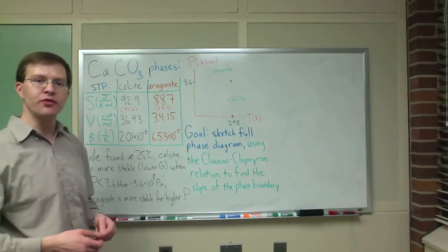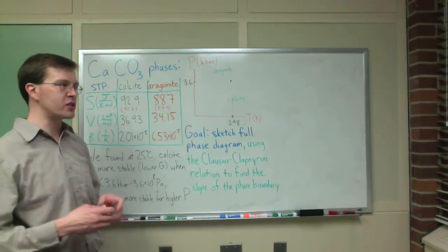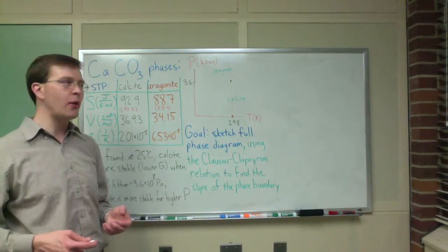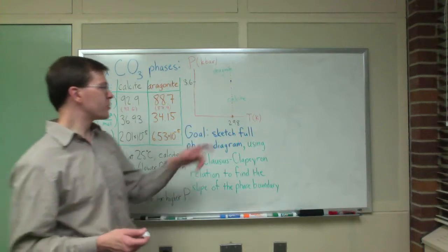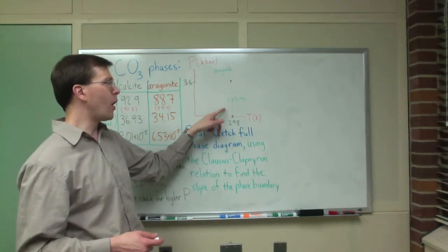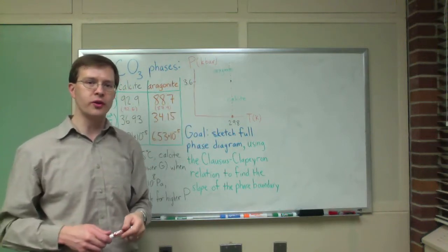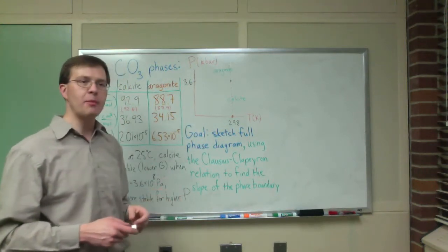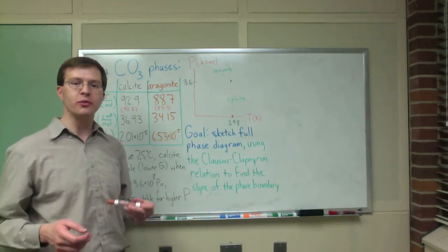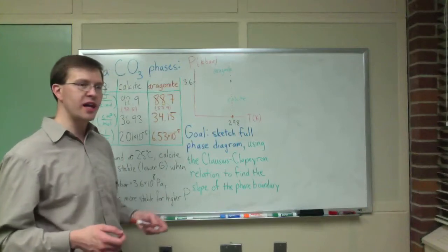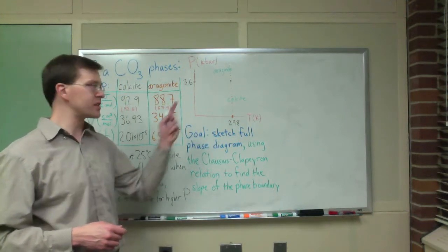All we have to do is extrapolate Gibbs free energies. We found that point in class using the Gibbs free energy of each of these two crystal structures of calcium carbonate. Now I want to go from just a single point to figuring out more. There's a clever way of doing that using what's called the Clausius-Clapeyron relation, which tells us the slope of the phase boundary. We're going to quickly derive it, and then use it to sketch the full phase diagram.